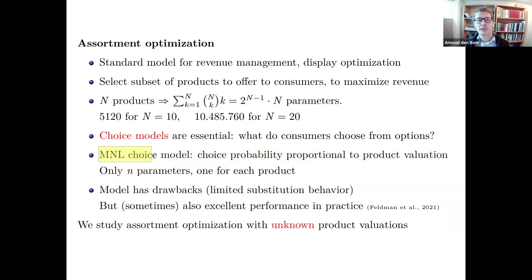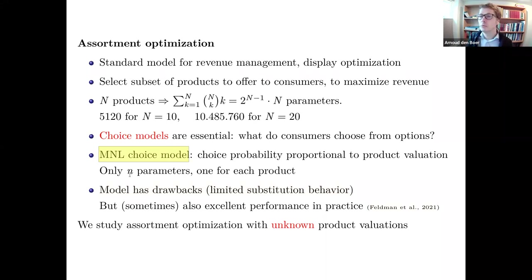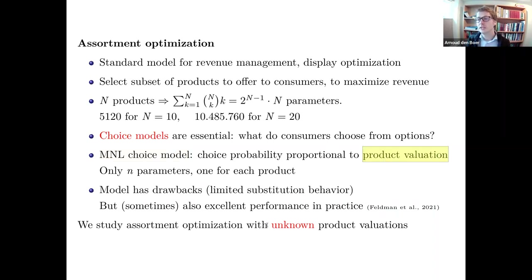The MNL model has several drawbacks — for example the red bus/blue bus paradox — and only models limited substitution behavior. There are many extensions: nested logit, mixed logit, Markov chain models. Today we focus on assortment optimization under the simple MNL model, with the twist that we don't know the product valuations and need to learn them from data.